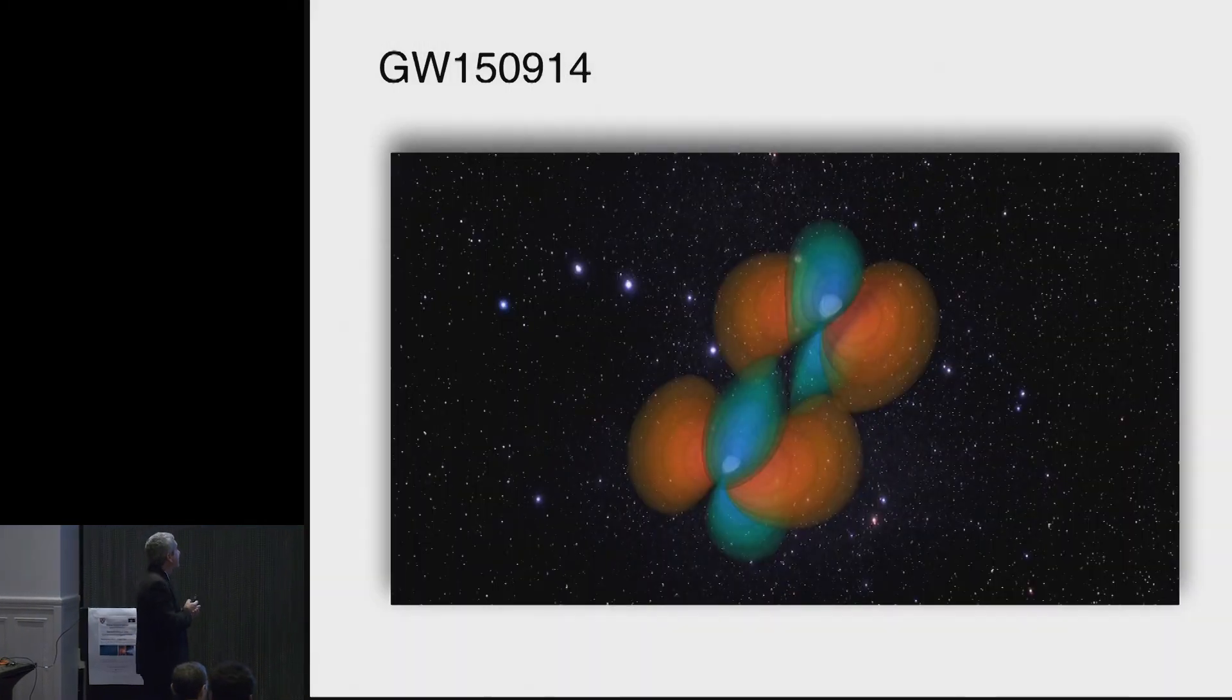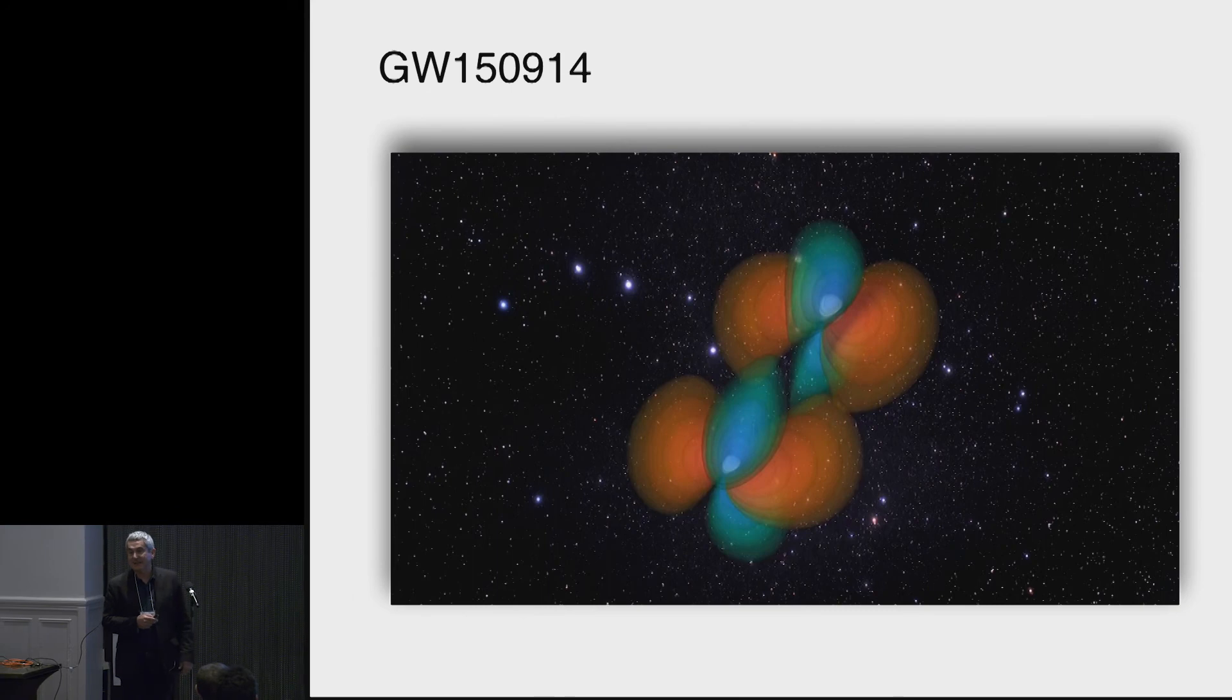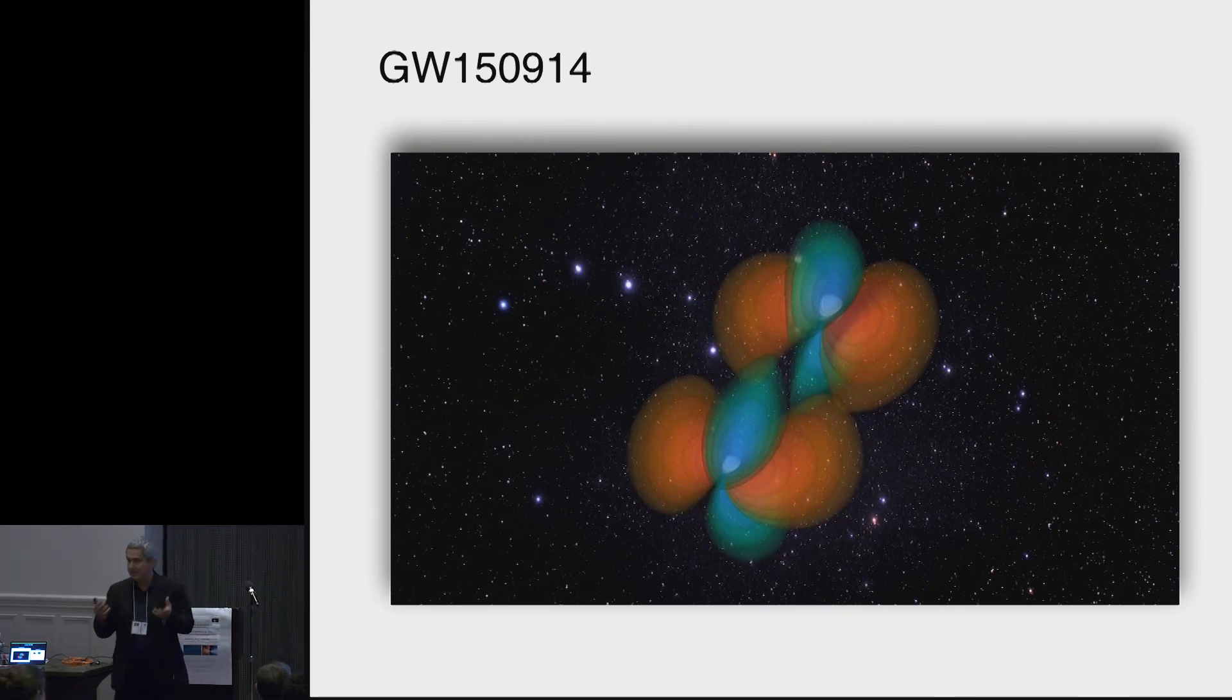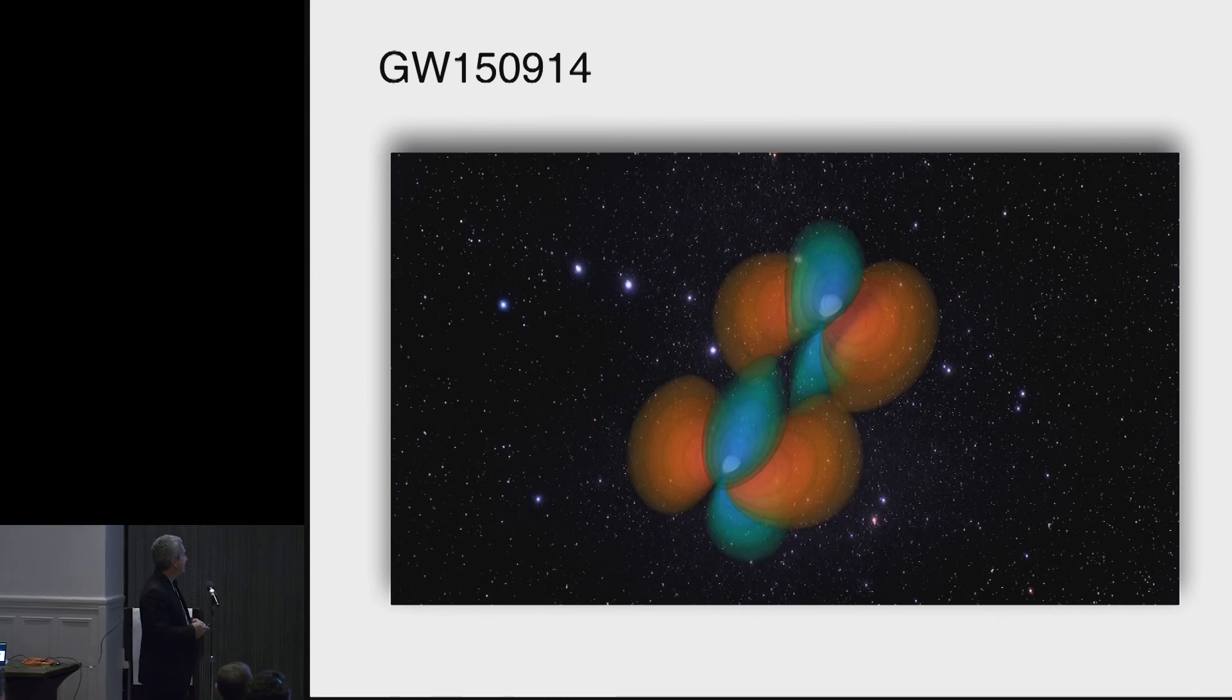All right, and this is if you want the current state of the simulations. This is a simulation of the event of the first detection of gravitational waves. We put the parameters that were observed or the best estimate of those parameters. And here these blobs, it's gravitational radiation.